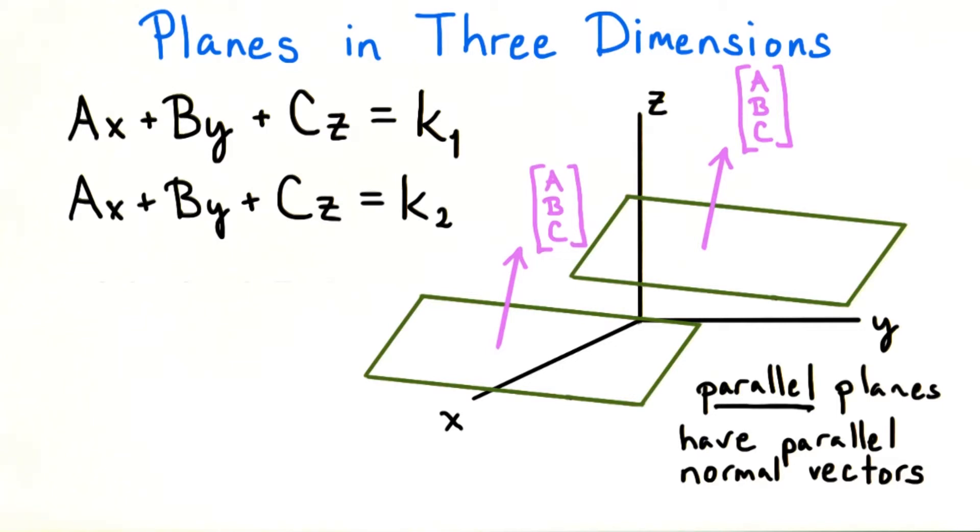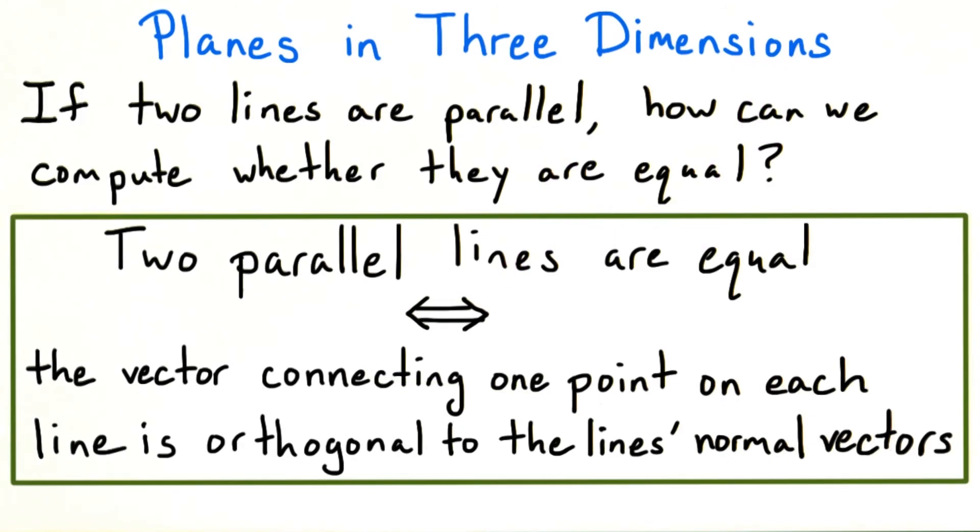This is just like the case with lines in two dimensions. Two different lines with the same normal vector don't intersect. We also have another analogy to our treatment of lines in two dimensions.